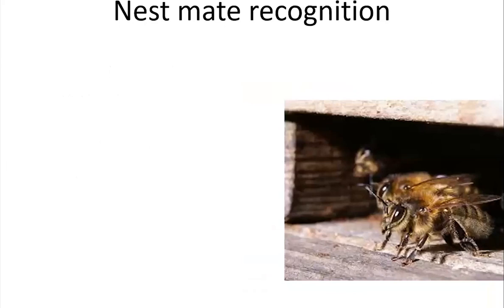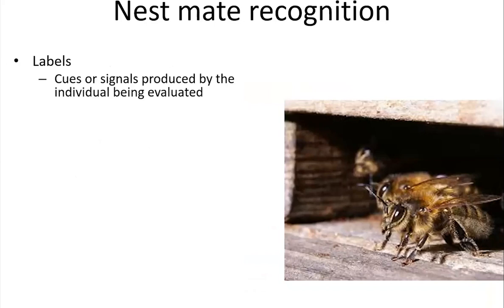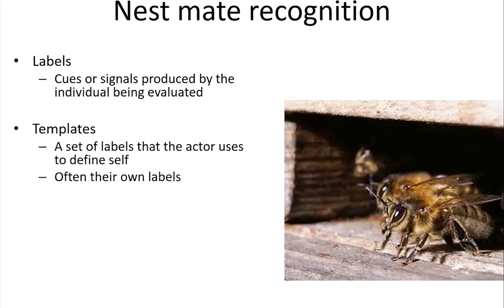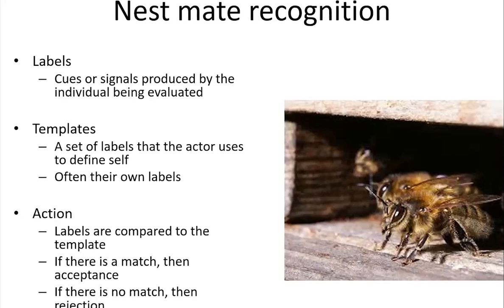We're going to run through the major pheromone systems. After queen pheromones and reproductive signaling, the context that's received the most attention is nest mate recognition. The conceptual model we like to use holds that there are labels — signals produced by individuals as identifiers — and that every individual also has a template, which is a set of labels they use to define self and non-self, usually their own labels. The individual compares their labels to those of another individual they encounter: if there's a match, there's acceptance; if not, there's rejection. It's actually easier to follow if you look at some data that illustrates how it works.